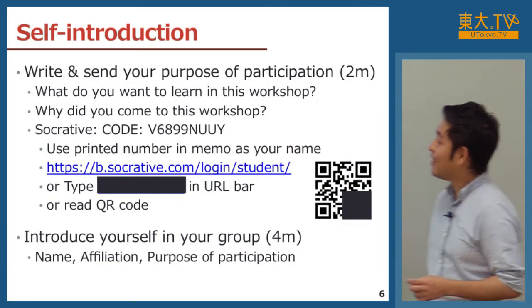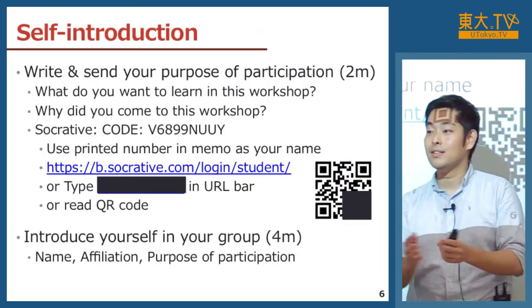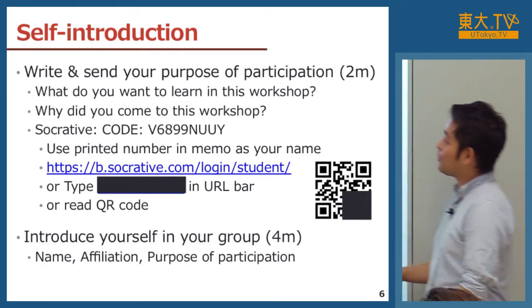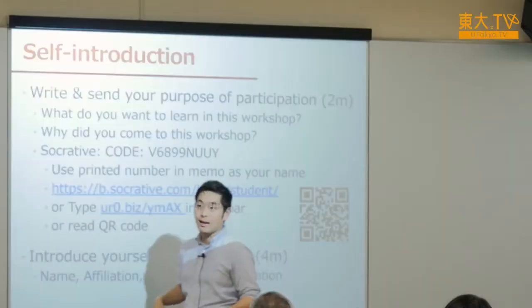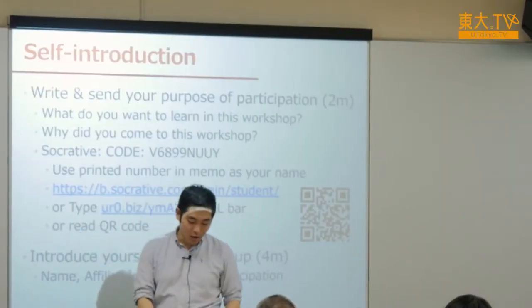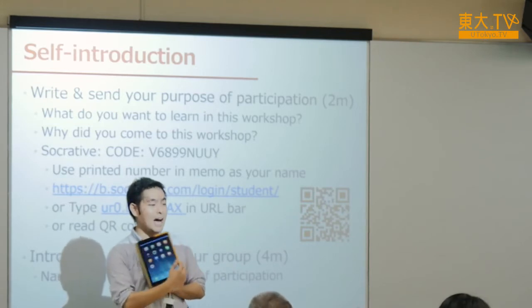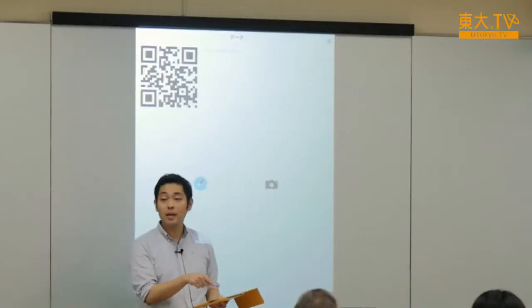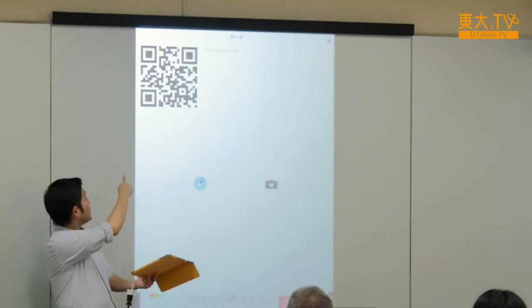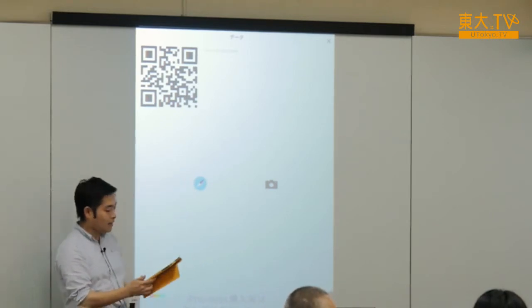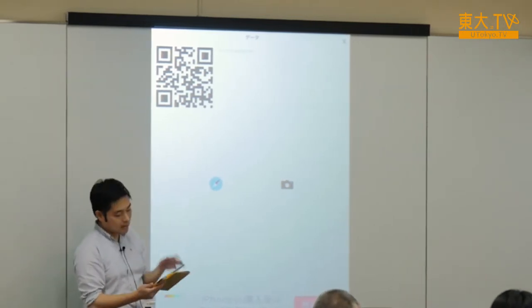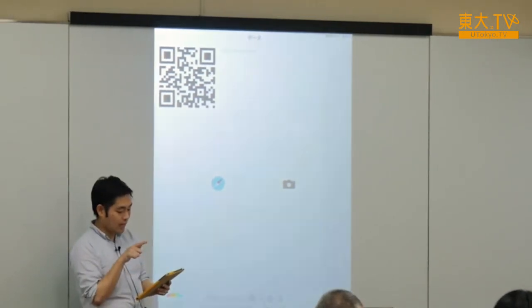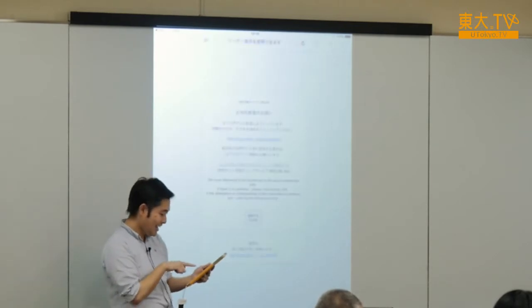First I would like you to introduce yourself in the group. I would like you to write and send your purpose of participation — what do you want to learn in this workshop? Please use the iPad, turn it on, and there is a QR code here. Would you press that? It automatically turns to this display and you can touch the link — HTTP — and you can push the first link on this page.